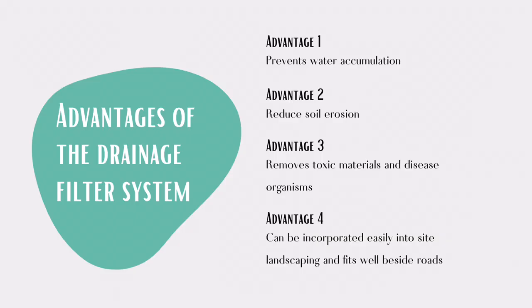Here are some of the advantages of the drainage filter system that we invented. Firstly, it can help prevent water accumulation that can lead to flooding by directing water away from the school. The filter drainage system can also prevent the accumulation of stagnant water, which can encourage mosquitoes to breed. We don't want our students, friends, and teachers to be sick because of dengue, do we?